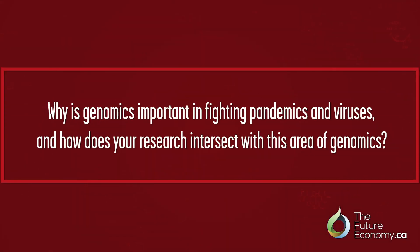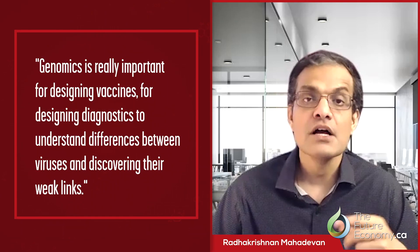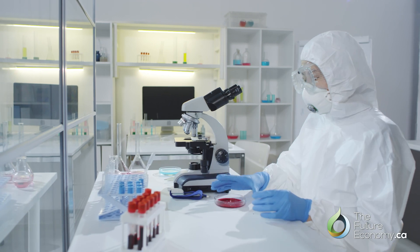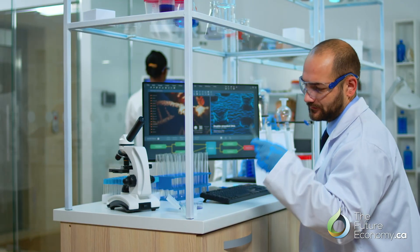We're obviously in the middle of a global pandemic, and we know there will be more. Why is genomics important in fighting pandemics and viruses, and how does your research intersect with that field? The genome sequence is really important for designing vaccines and diagnostics — to understand how a new virus differs from existing ones and what the weak links are. You need genomic information to understand whether a particular variant is spreading, and whether mutations allow the virus to escape antibody or vaccine treatment.